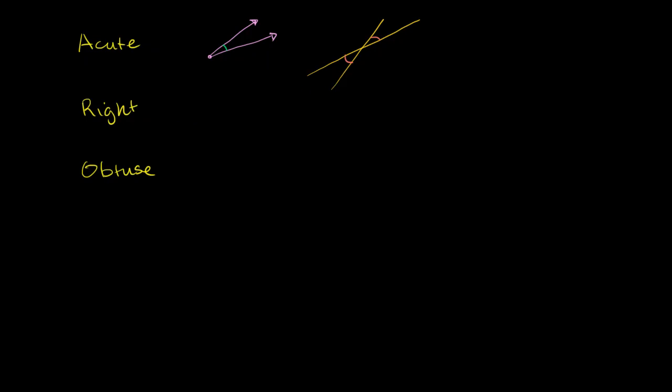Right angles are when the rays or the lines are going, I don't want to use the word right in my definition, but they're kind of, if one is going horizontal, the other one will be going vertical. So let me draw it with the rays first. So the right angle, this one's going from the left to the right. Then the other ray is going from the bottom to the top.